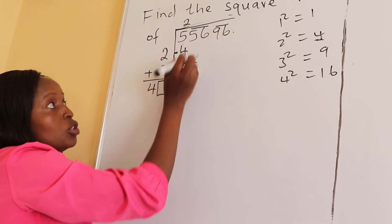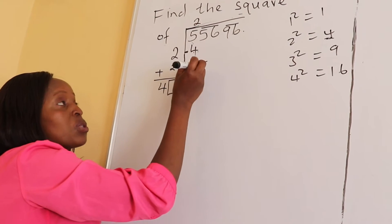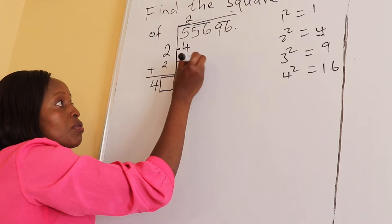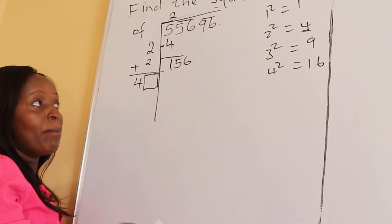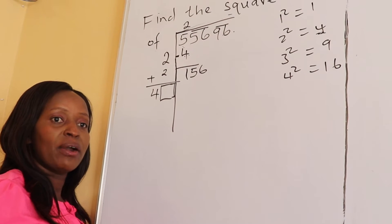Now we have our quotient 2, we have also added and taken away and remained with 1 here. So now we drop this pair - you don't drop one digit, you drop a pair. Our pair is 56 and the new number is 156.